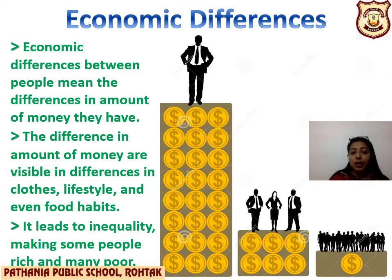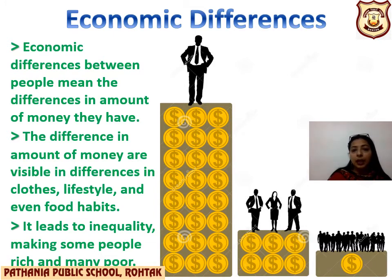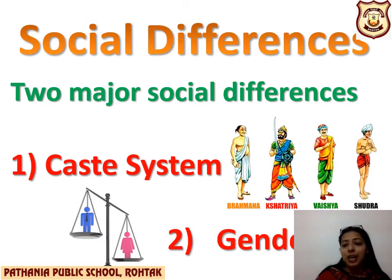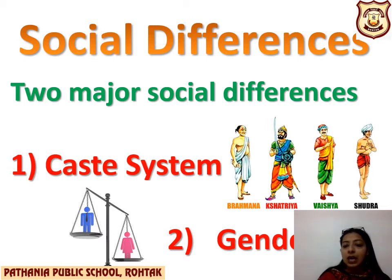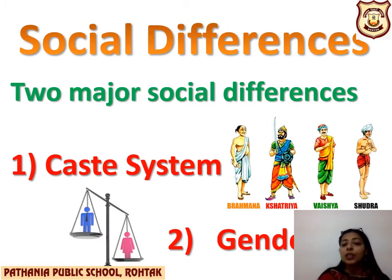The rich are getting richer and the poor are getting poorer. The second and most important differences we face in our society today are social differences. Social differences include two things: one is the caste system and the other is gender bias. The caste system has come from history, and people were divided into four different castes.